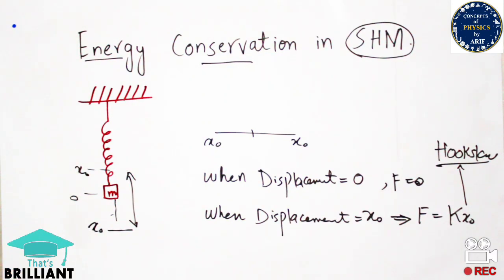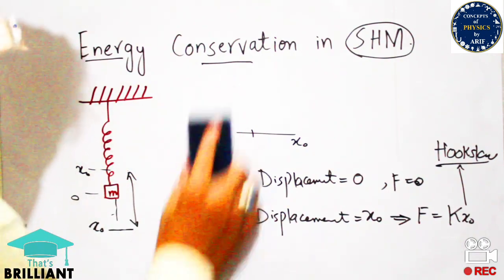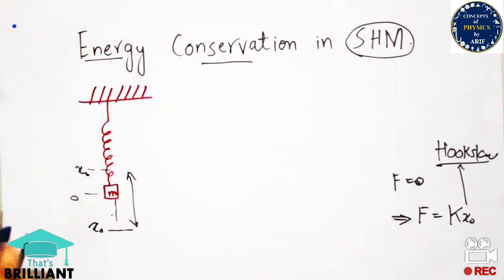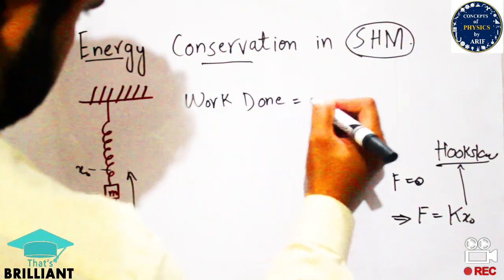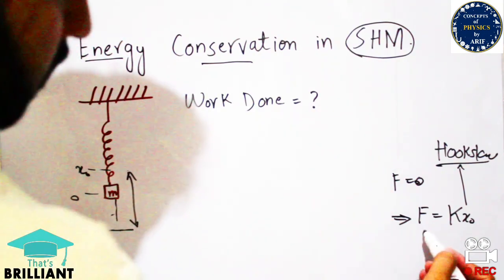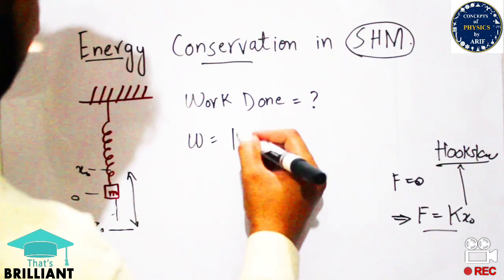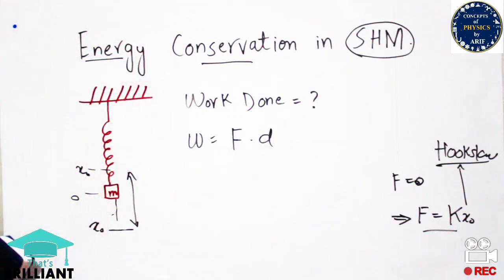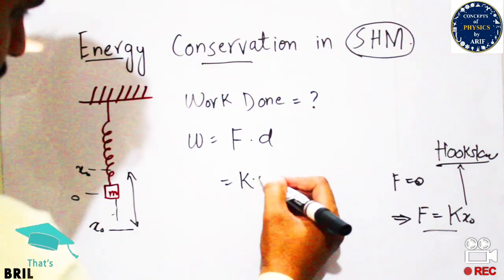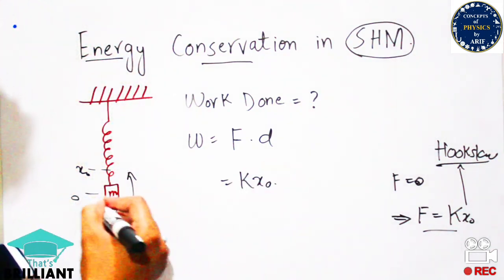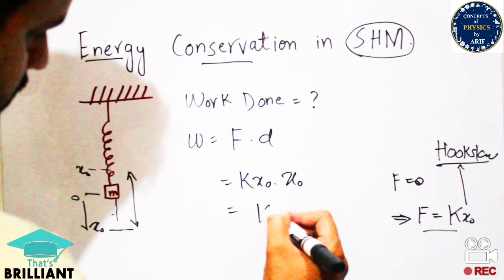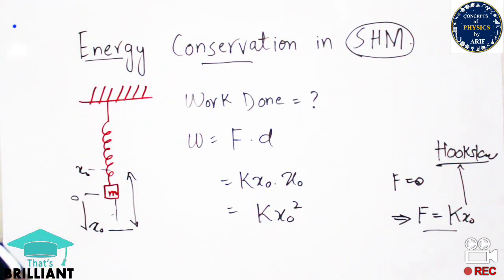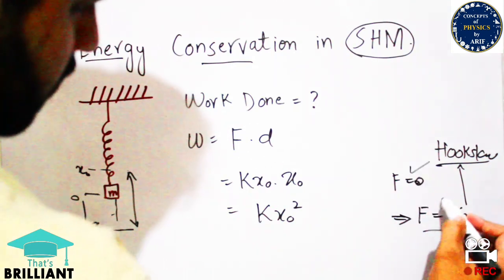We will also discuss the work done by this force. When displacement is zero, there will be no work done. When there is a displacement of X₀, the total work done will be the product of force multiplied by displacement. According to Hooke's law, force is kX₀ and displacement is X₀, so the product is kX₀².